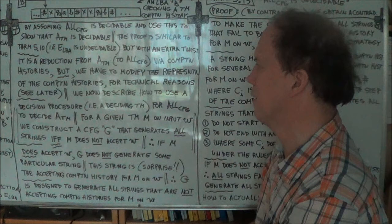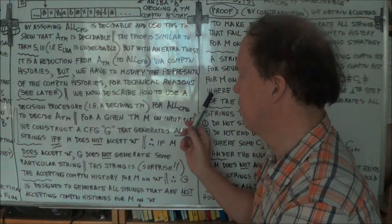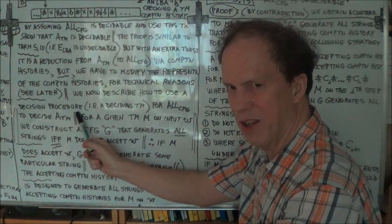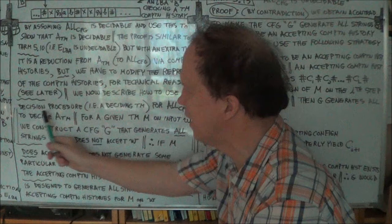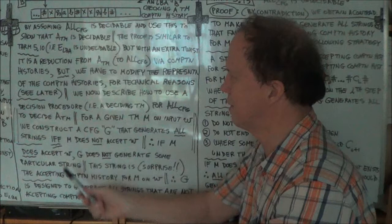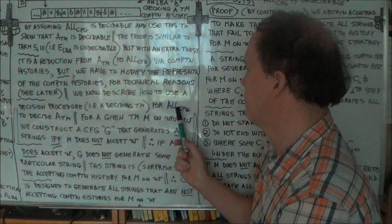Now we need to find — using a decider for ALL_CFG, from our proof by contradiction assumption — how do we use the decider for ALL_CFG to decide A_TM? That's similar to the previous theorem. Before, we constructed a language B; now we're going to construct a context-free grammar G.